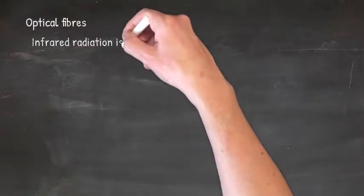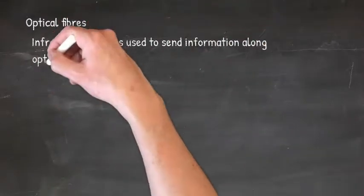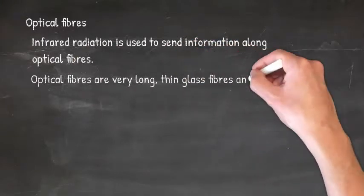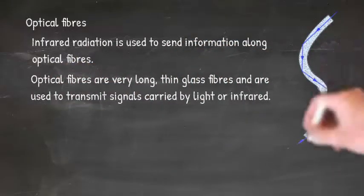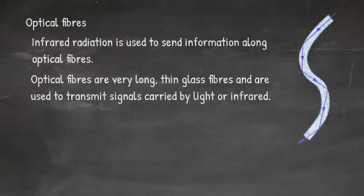One last thing. Although we've been talking about microwaves and radio waves, infrared is also used for communication. It is used to transmit information along optical fibers. Optical fibers are very long, thin pieces of glass fiber, and are used to transmit signals carried by light or infrared.